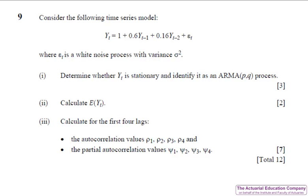Question nine tests time series from chapter 12 of the notes and is the most gorgeous question we've had for ages. This would have been an easy 12 marks. In part one we have to determine whether the process is stationary. So to do that we need to rearrange it in terms of the backward shift operator and then obtain our characteristic equation set it equal to zero and solve it. Both roots will be greater than one and so it's stationary.